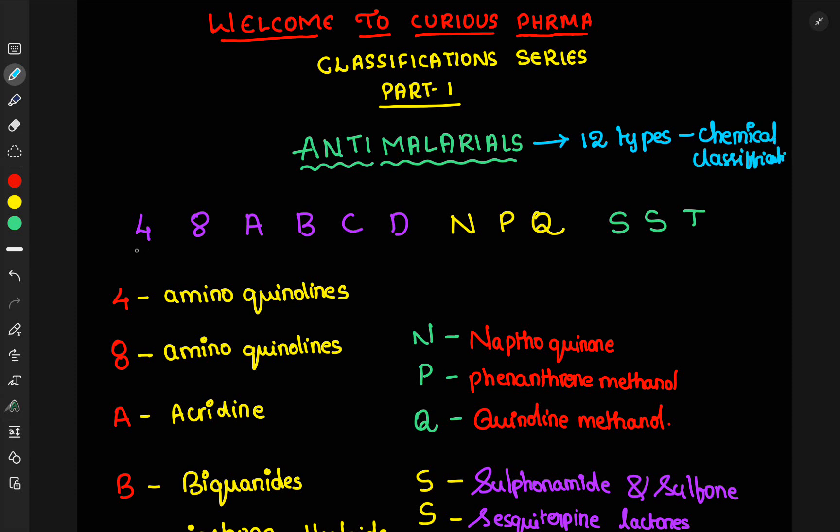Here, I have arranged all these classifications first letters in a sequenced way so that you can remember very easily. That is 4, 8, A, B, C, D, N, P, Q, S, S, T. It is an alphabetical letter in which you will be memorizing it very easily.